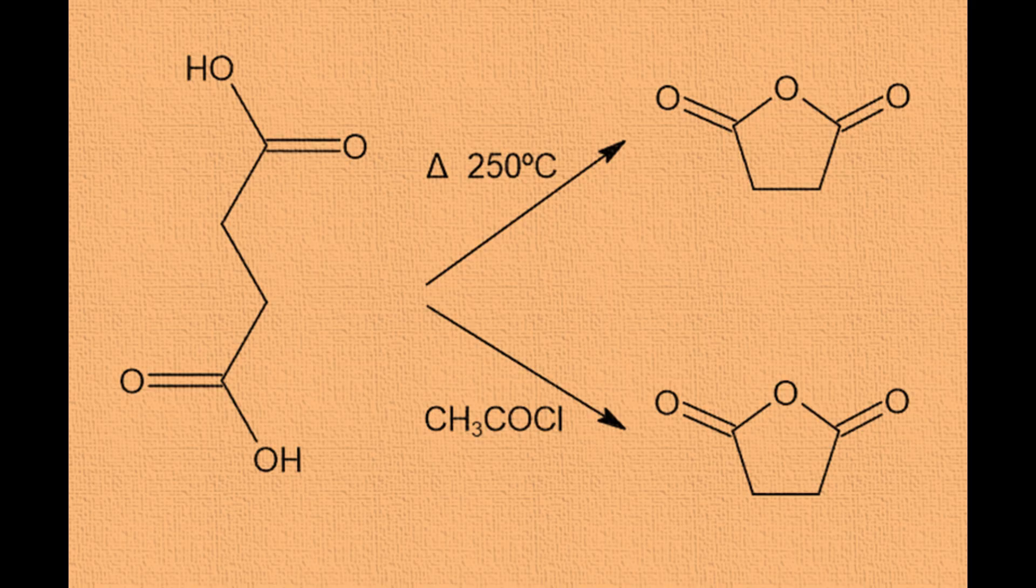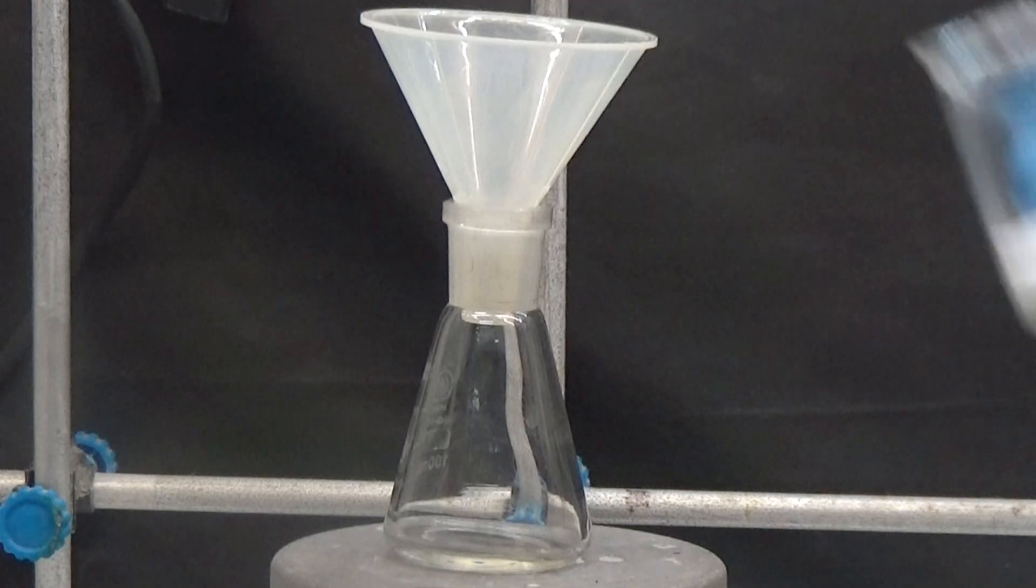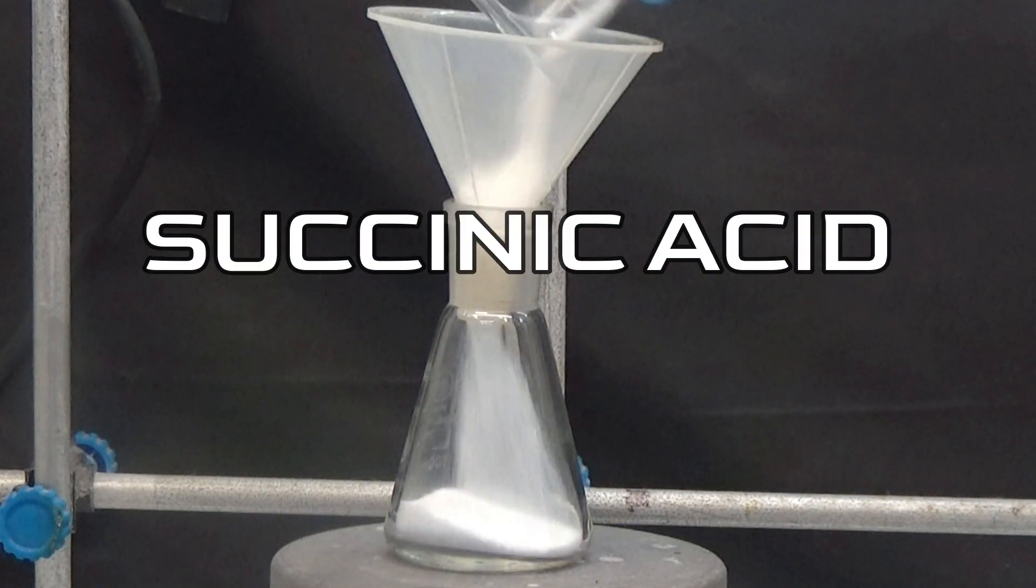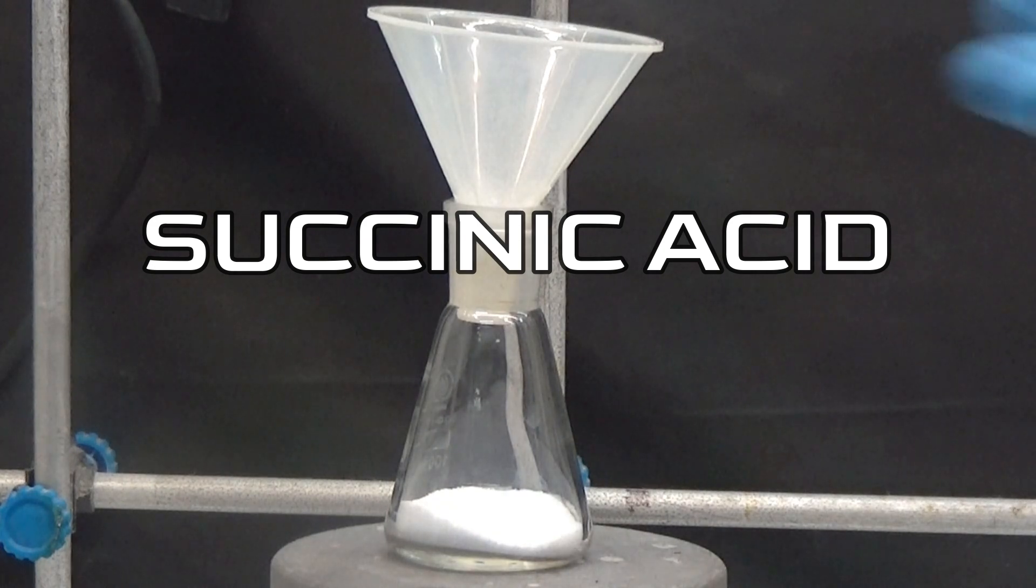In this synthesis, I will use two different processes. One is economical and the other is more expensive. As a starting product, we will use succinic acid, which is easy to find and inexpensive.